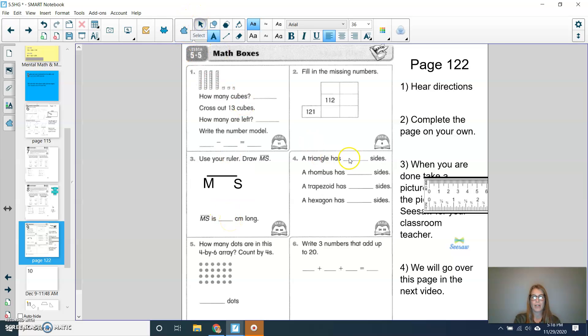For question number four, a triangle has how many sides, a rhombus has how many sides, a trapezoid and a hexagon, how many sides? You can use your template to double check. For question five, how many dots are in this four by six array? And you can count by fours if you'd like. And then for question six, write three numbers that add up to 20. So there's more than one answer, but I want you to think, how can you get to 20? What three numbers could you add up? All right. I will see you next time.